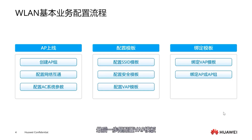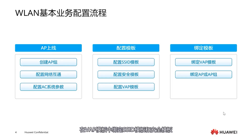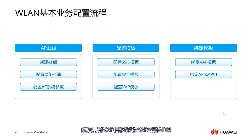The final step is configuring the VAP template. After configuring the templates, we need to bind them — bind the SSID template and security template in the VAP template. Then bind the VAP template to the AP or AP group. Thus our WLAN service can be activated.